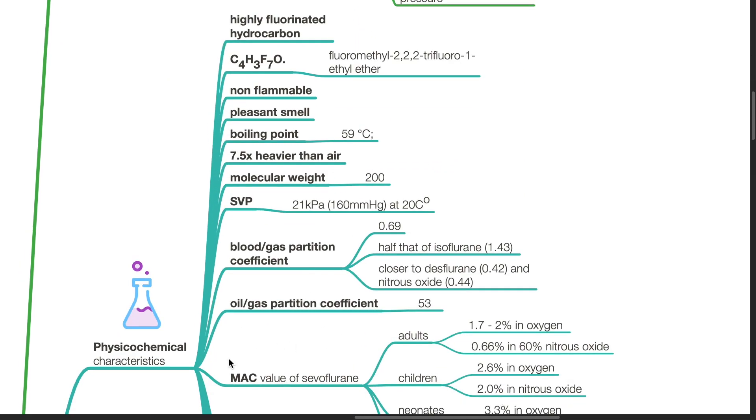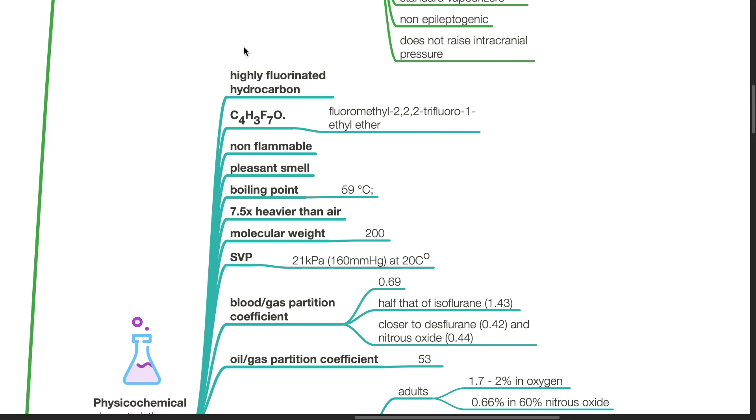Physical chemical characteristics of Sevoflurane. It is a highly fluorinated hydrocarbon with a simple formula of C4H3F7O, also known as fluoromethyl-2,2,2-trifluoro-1-ethyl ether. It is non-flammable and has a pleasant smell, a boiling point of 59 degrees Celsius, is 7.5 times heavier than air, and has a molecular weight of 200.